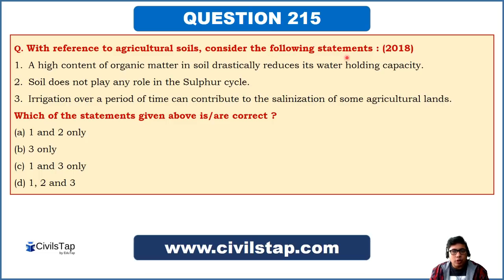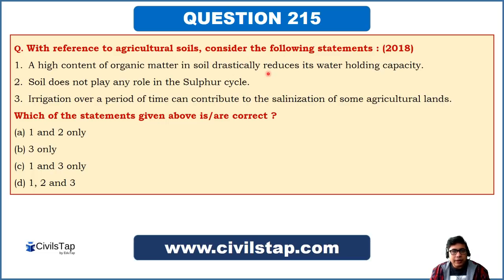The next question: with reference to agricultural soils, consider these statements — 1) A high content of organic matter in soil drastically reduces its water holding capacity; 2) Soil does not play any role in the sulfur cycle; 3) Irrigation over a period of time can contribute to salinization of some agricultural lands. Statement 1 is wrong — the opposite is true: higher organic matter increases water holding capacity. Statement 2 is also wrong — soil plays a very important role in the sulfur cycle and all biogeochemical cycles.